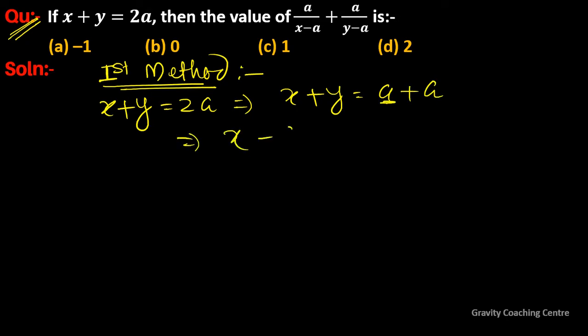So this implies that, taking one a to the left side and y to the right side, we get x minus a equals negative y plus a, which gives us y minus a.